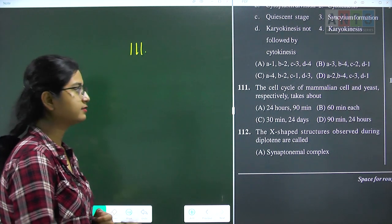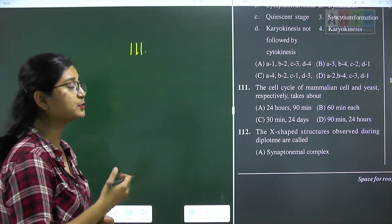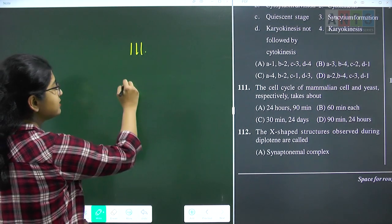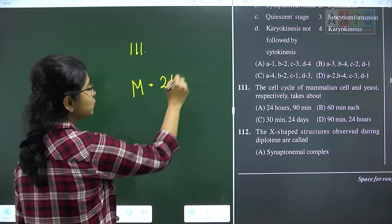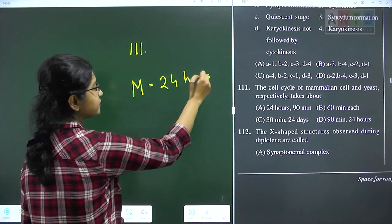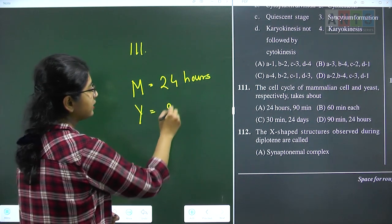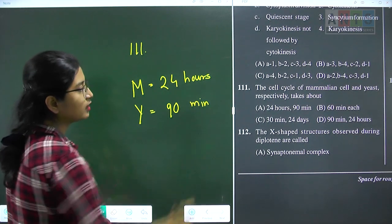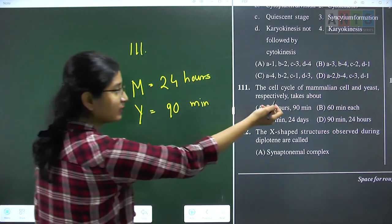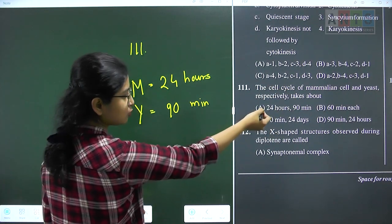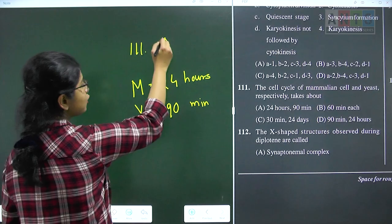Question 111: the cell cycle of mammalian cell and yeast respectively takes about? In mammalian cells, the total cell cycle takes about 24 hours, whereas in yeast it takes approximately 90 minutes. So respectively: 24 hours and 90 minutes. Question 111 answer is option A.